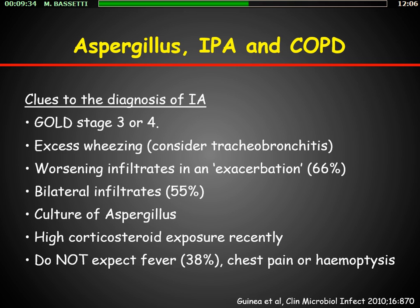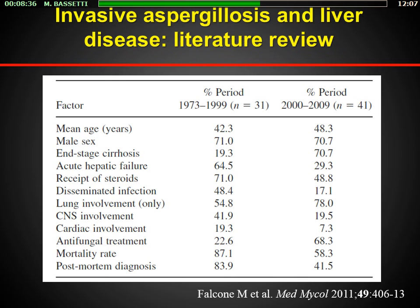Guinea tried to define the clues for diagnosing invasive aspergillosis in COPD. The patient profile: GOLD stage three and four, presenting with worsening wheezing or tracheobronchitis, worsening or bilateral infiltrates on exacerbation, culture positive for Aspergillus, and high corticosteroid exposure recently. Patients treated with very high doses of steroids or for a very long period are typical high-risk patients. Do not expect fever — fever is present in less than 50% of cases.